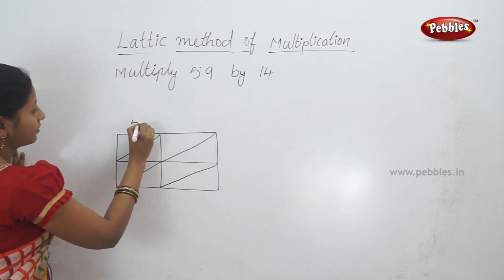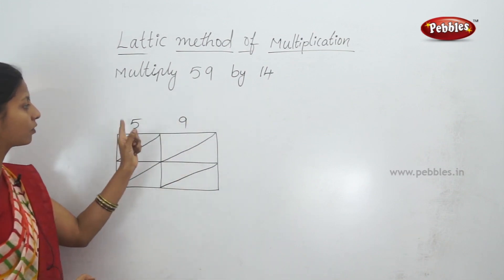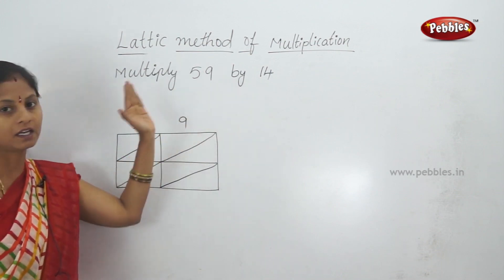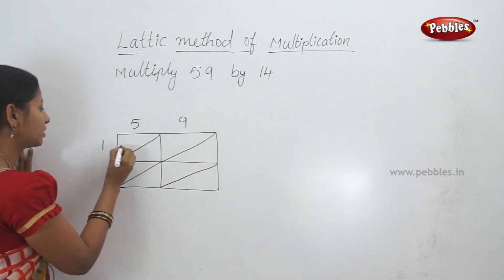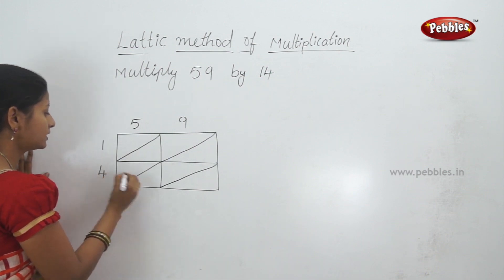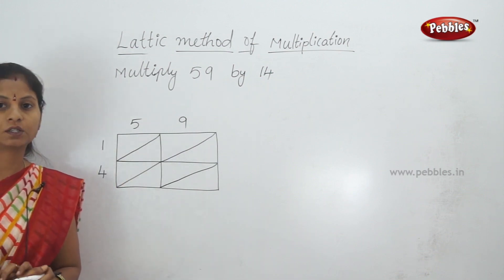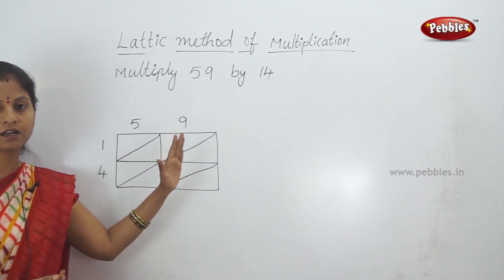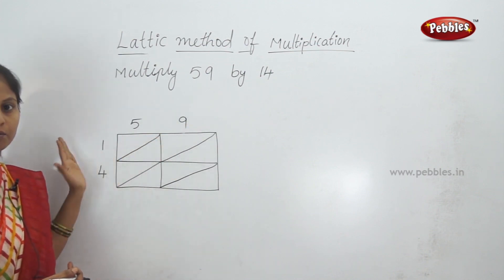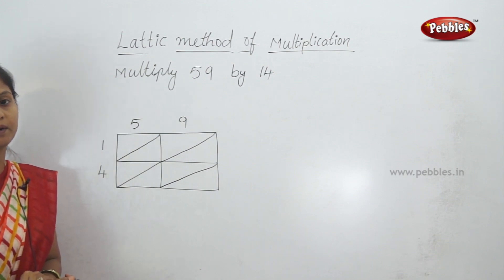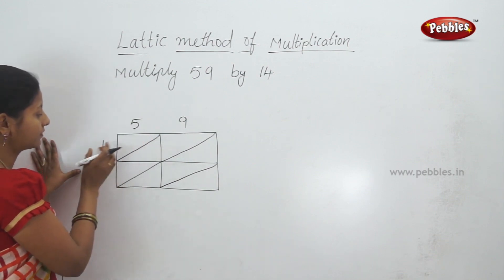The first number is 59 — digits 5 and 9 go on the top of the two boxes. The next number goes on the left side: 1 for the first box on the left side, 4 for the second box on the left side. We can break up each digit. Since the number is a single digit, this box is on the left side.